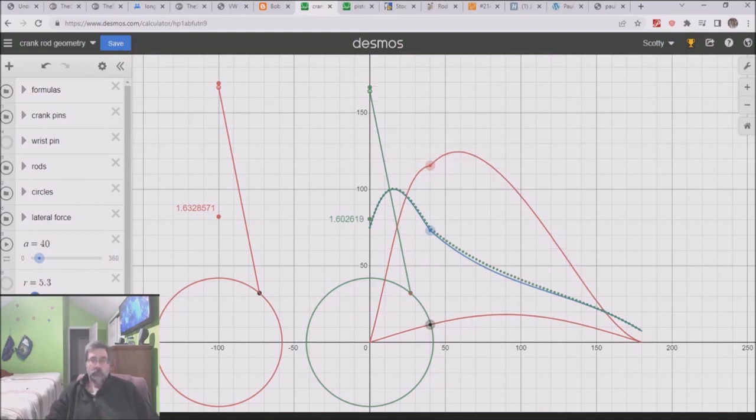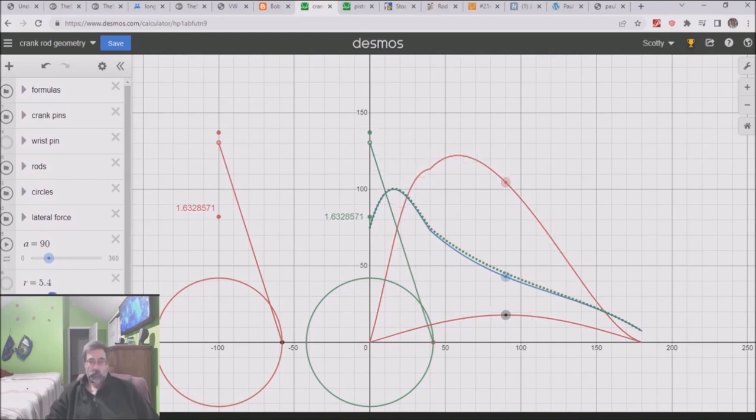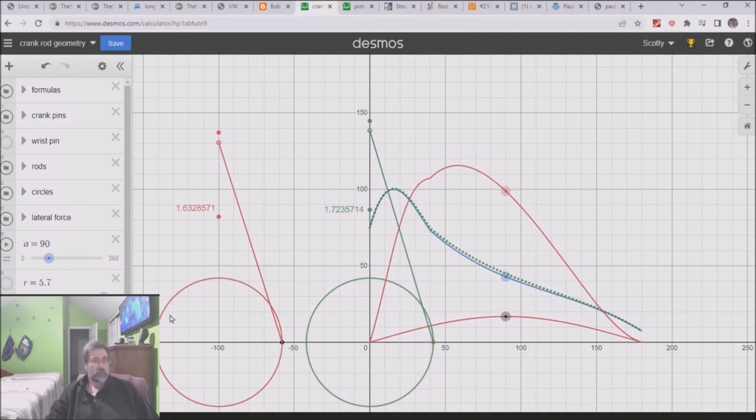This is why nobody really focuses on rod ratio as far as lateral load goes. This is like the worst crank you could stick in here. Let's actually shove it to the worst possible crank, the 84. Pretty much in the stock case, you can't really go past an 84, right? So you build the old 2332, you stick your 94 by 84.